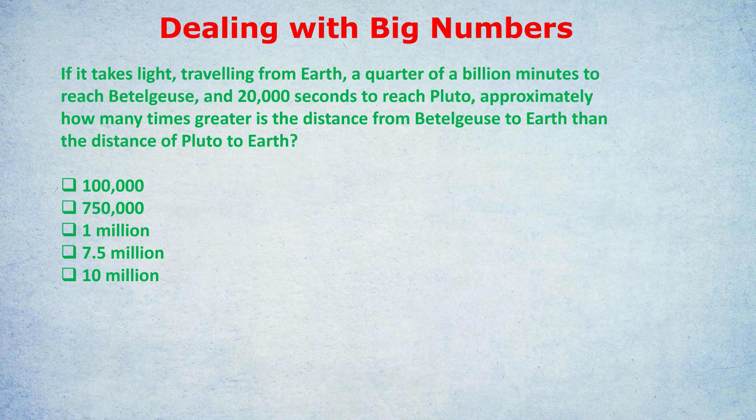If it takes light traveling from Earth — and these are true stats by the way — a quarter of a billion minutes to reach Betelgeuse, a massive star a long way away, and 20,000 seconds to reach Pluto, approximately how many times greater is the distance from Betelgeuse to Earth than the distance of Pluto to Earth?